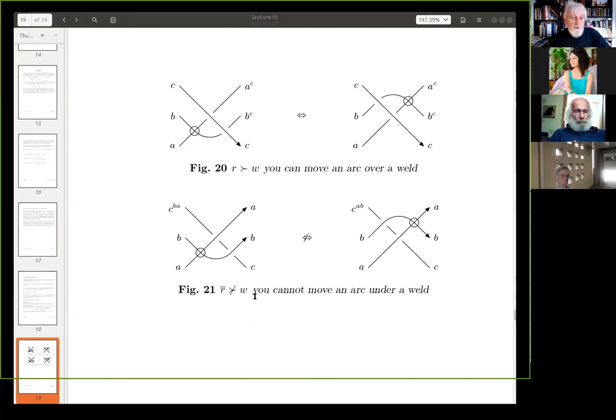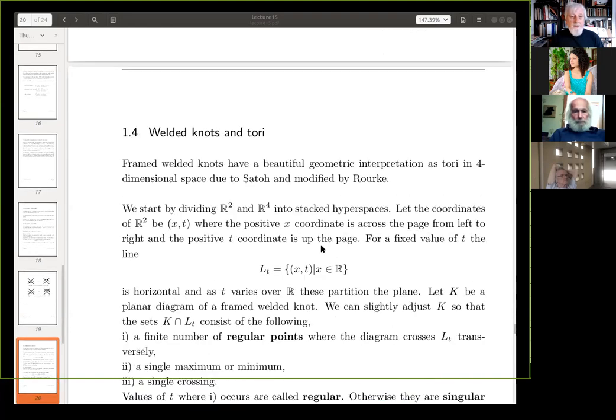And welded knots, now, this is some, I had to change my notes this afternoon, and I may even have to change them again, so framed welded knots, which I always assumed, I'd forgotten that they needed to be framed, have a beautiful geometric interpretation as tori in four-dimensional space due to Sato and modified by Rourke. Now, Colin, is that a reasonable sentence? Sato gives the picture for virtual, but he doesn't work out why weld works, he doesn't have a concept of weld, so the point is, if you put the obvious equivalence relation on Sato's pictures, you get welded, and that's all I proved. Okay, are you happy with that, Lou? Yes. Yeah. Yeah, I think he's right, Sato wasn't aware of welded when he wrote the paper. Right, okay.